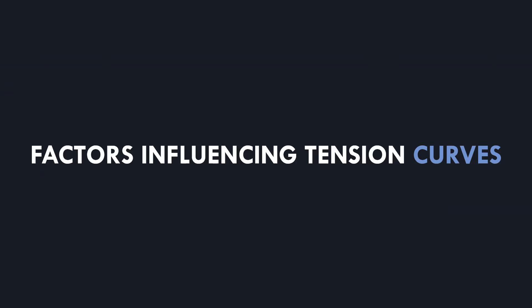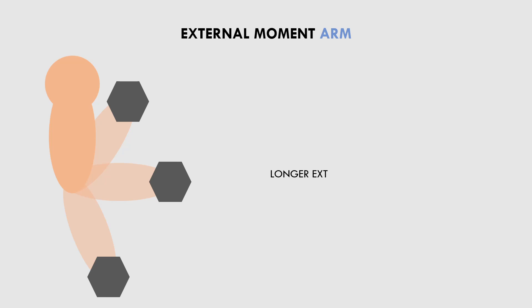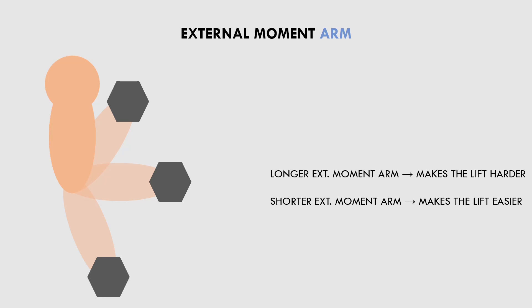So why do exercises have different tension curves? There are three main factors influencing the tension curves of each lift. The first factor is the external moment arm. This refers to the position of the load in space relative to the joint. To briefly summarise, longer moment arms make the lift harder, while shorter moment arms make the lift easier.